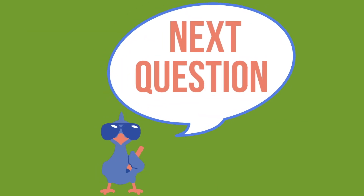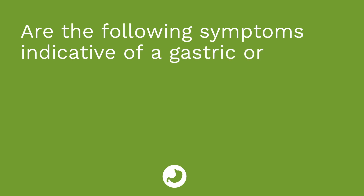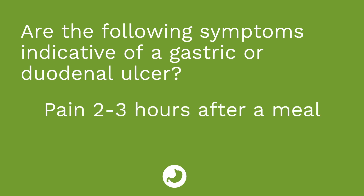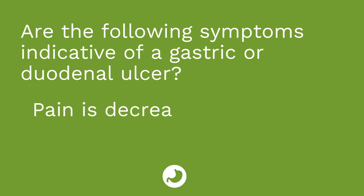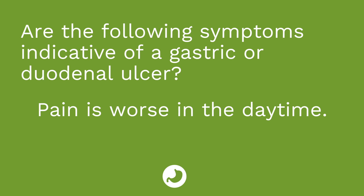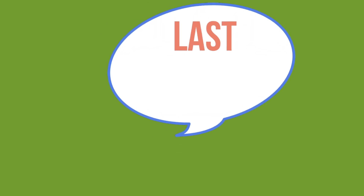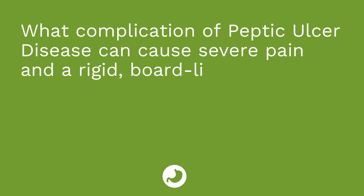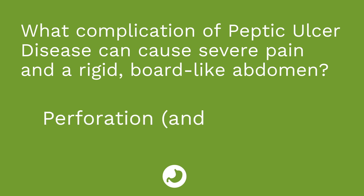Question number two is a multi-part question. I'll give you a symptom and you tell me whether it's a gastric ulcer or a duodenal ulcer. Pain two to three hours after a meal — that is a duodenal ulcer. Pain is decreased with eating — also a duodenal ulcer. Pain is worse in the daytime — that is a gastric ulcer. Question number three: What complication of peptic ulcer disease can cause severe pain and a rigid, board-like abdomen? The answer is perforation, which results in peritonitis.